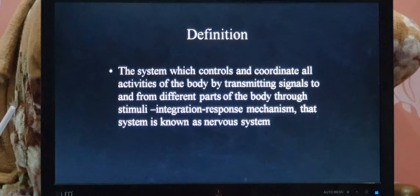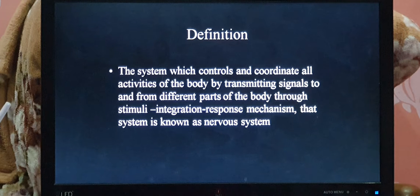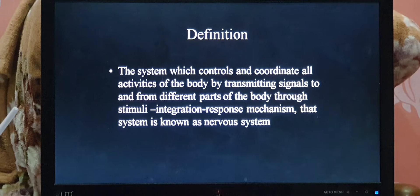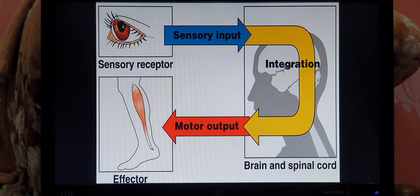The nervous system is the system which controls and coordinates all the activities of the body by transmitting signals to and from different parts of the body through the stimuli-integration-response mechanism. In simple form, a stimulus is perceived, integration is done, and after that an appropriate response is produced. The stimulus is pursued through sensory input, integration is done by the central nervous system — the brain and spinal cord — and after that there is a motor output.